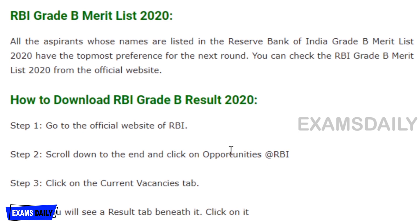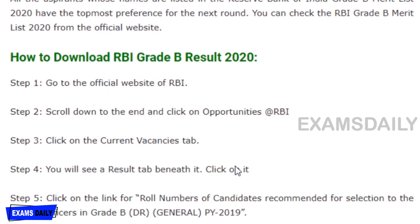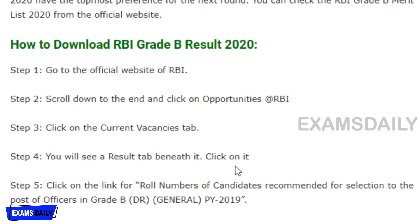Regarding the RBI Grade B merit list 2020 — candidates whose names appear in the Reserve Bank of India Grade B merit list 2020 will have the highest preference for the next round. You can check the RBI Grade B merit list on the official website.